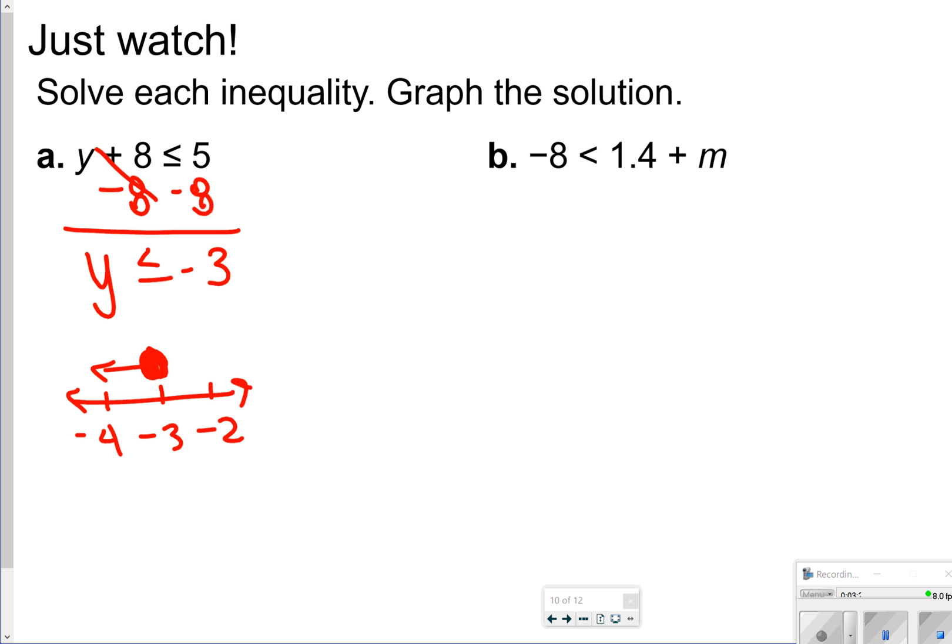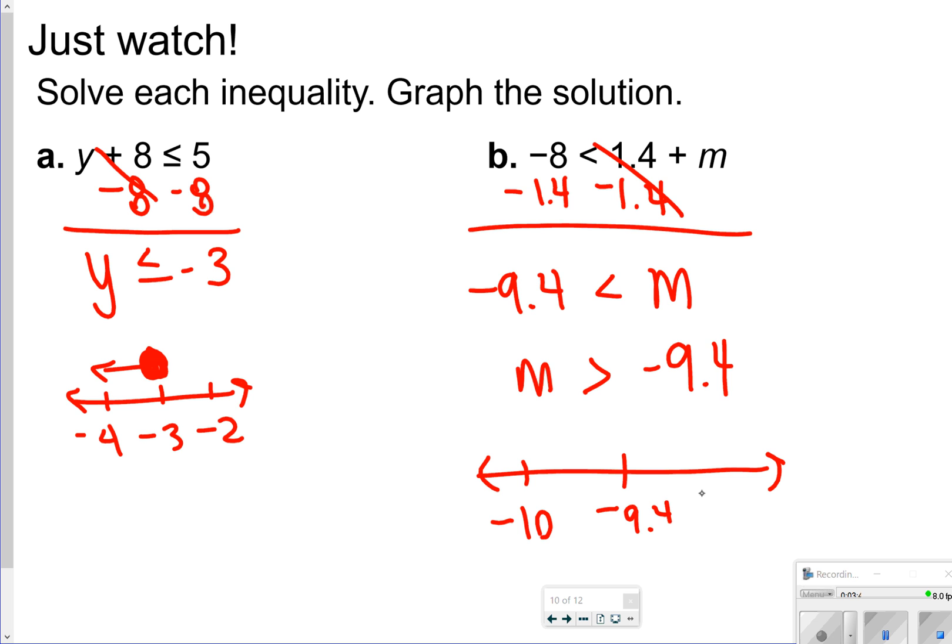For letter B, I'm going to be subtracting 1.4 because I have a positive 1.4. So I'll get negative 9.4 is less than M, but I can rewrite that as M is greater than negative 9.4. So on my number line, I've got negative 10, negative 9.4, and then negative 9. I have an open circle pointing to the right for greater than.